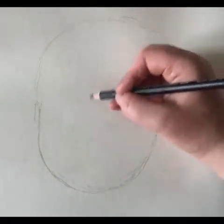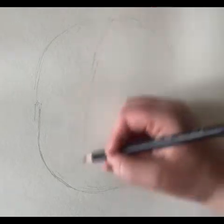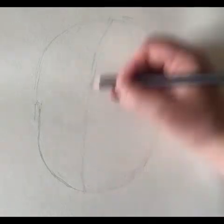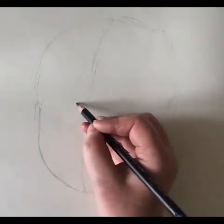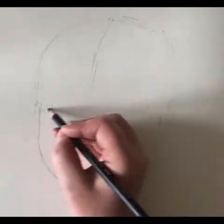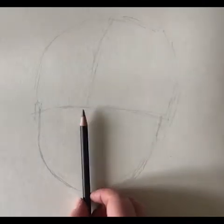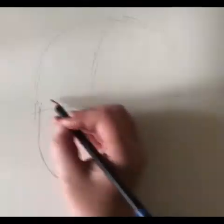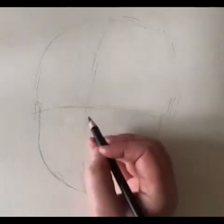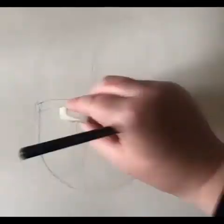Children's heads are much rounder than adults. I'm drawing a line down the middle which is sort of diagonal because the head is tilted. The line across the center is actually going to be the brow line because children's facial features are more squashed towards the bottom of the face.